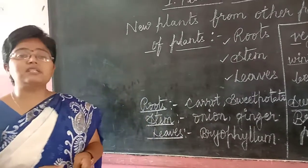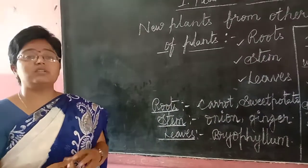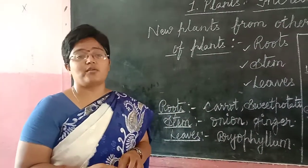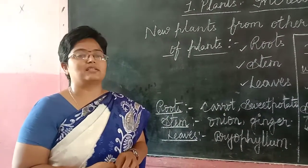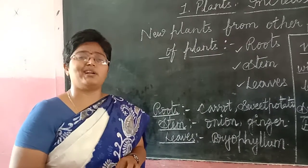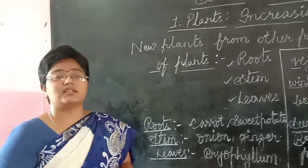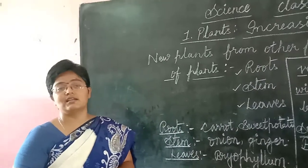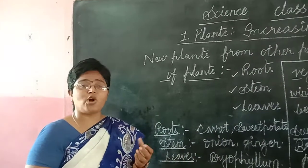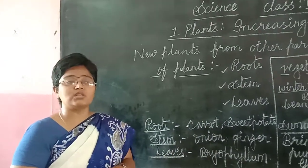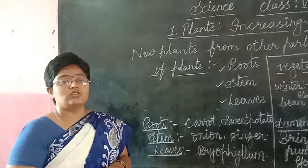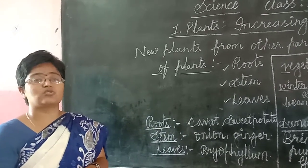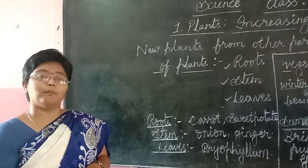Have you ever seen the potato, which contains black dot-like structures that form a new plant? Those structures are called buds or eyes. They form small leaves and grow into a new plant. So the potato produces a new plant through its eyes.